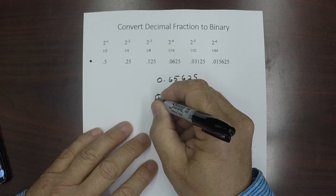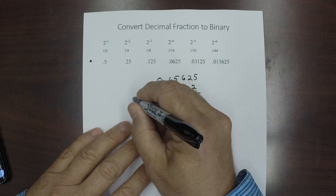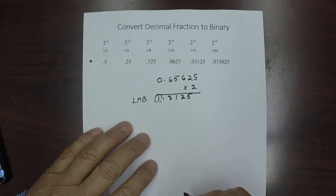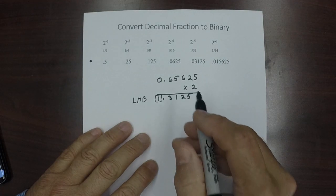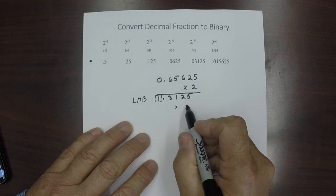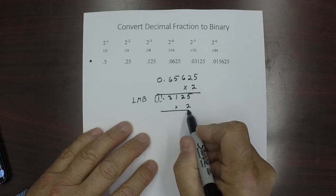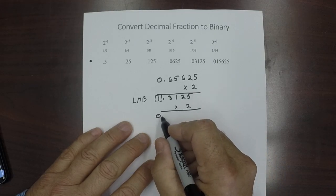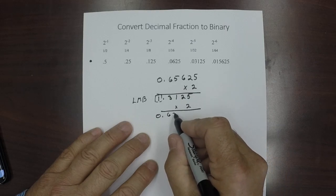This becomes our leftmost bit. Our leftmost bit. Remember that. Now we're going to take this number and we're going to multiply it by 2. That turns out to be 0.625. This is the next bit.